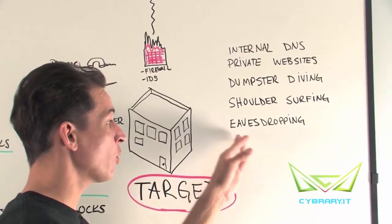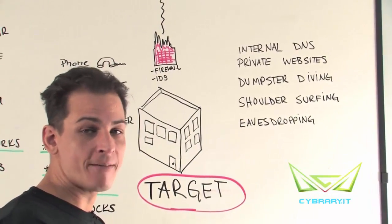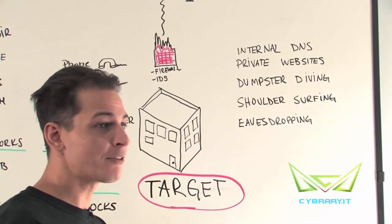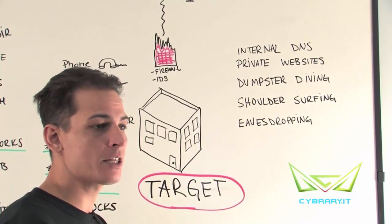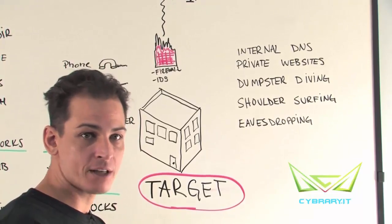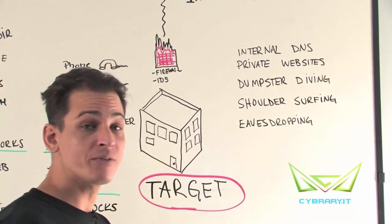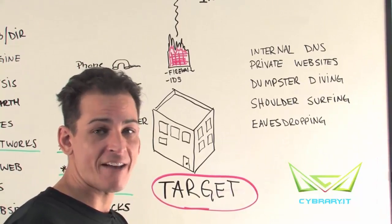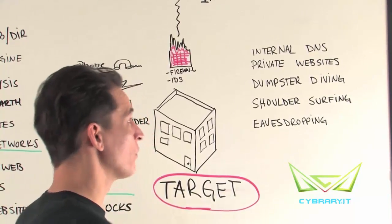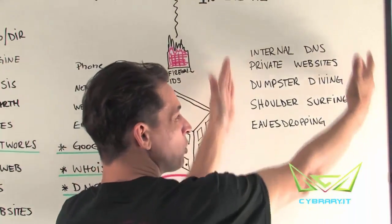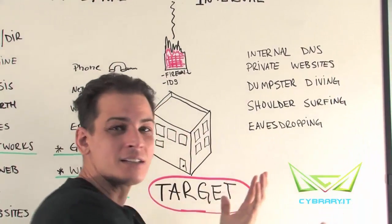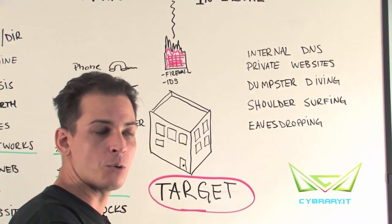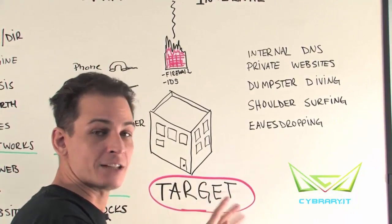And then of course, eavesdropping. Eavesdropping can happen just about anywhere — it could be the place where everybody gathers for lunch, inside the office or corporate center, or any nearby restaurant or location that facility has access to. But if you notice, there's only a handful of things we can realistically go after from a footprinting point of view against our target internally.